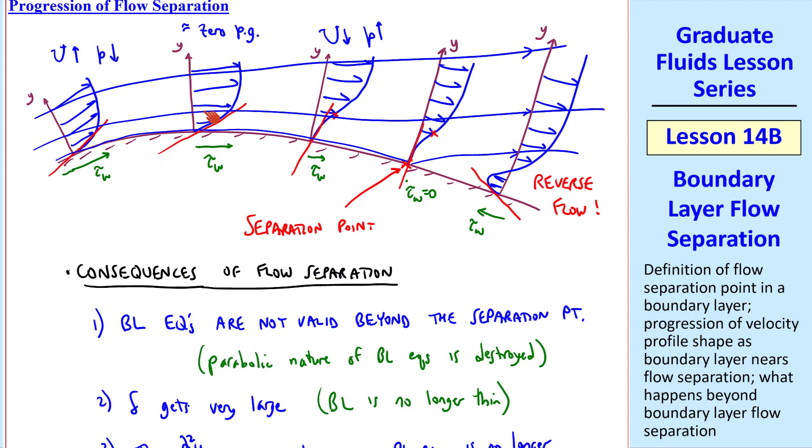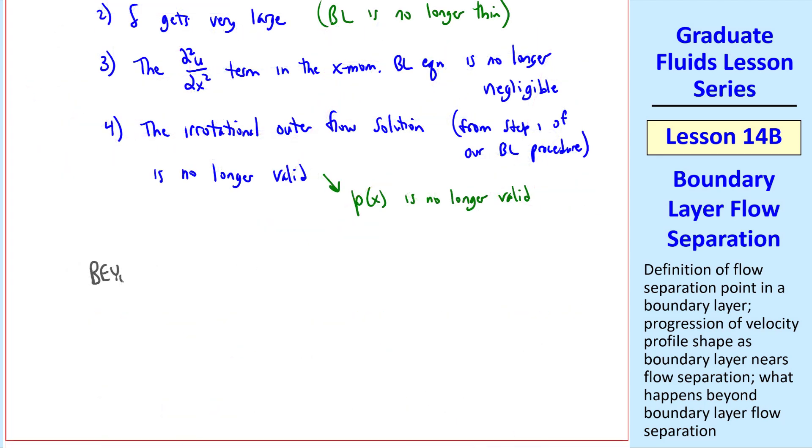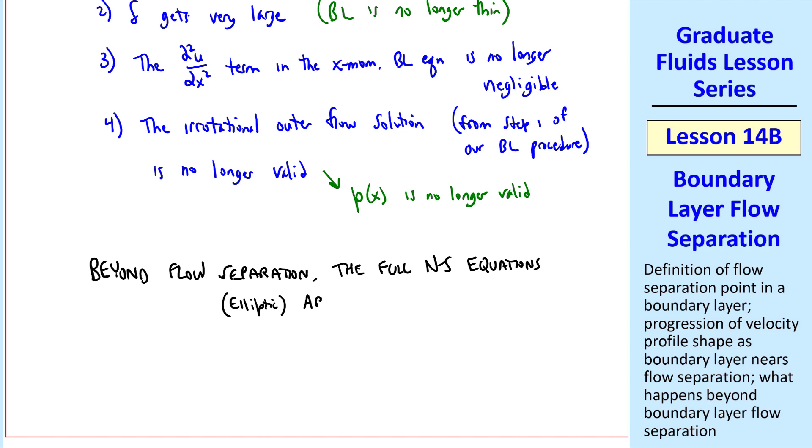This is critical because the p of x that we use to generate our boundary layer solution is no longer valid. In our example, the outer flow would just keep going along the wall here, but when you have flow separation, streamlines veer off, and the whole pressure field and velocity field in this region changes from what it was when we predicted the irrotational outer flow without separation. The bottom line is that beyond flow separation, the full Navier-Stokes equations, which are mathematically elliptic, are required. This is because we're now transferring information in both directions, downstream and upstream, hence the elliptic nature of the problem.